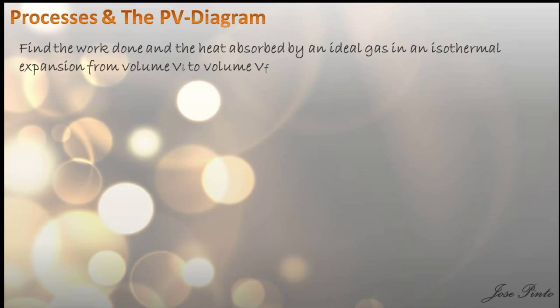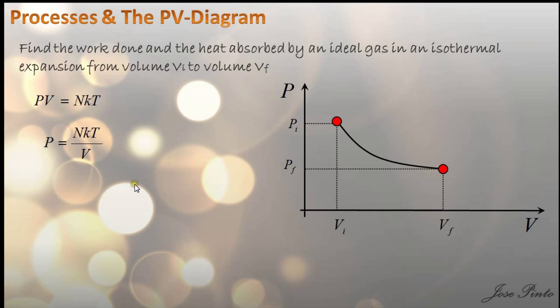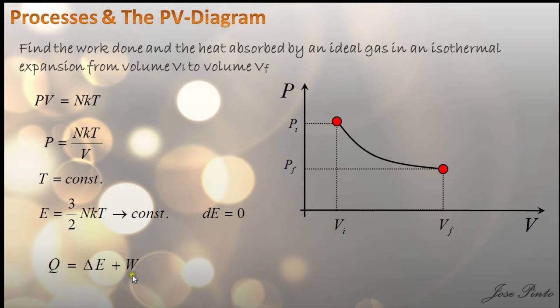First, when you hear the words ideal gas, you automatically think of the ideal gas equation, so you know what P is. Next, the process is isothermal, so the temperature is constant and you know how the graph looks. Notice that constant temperature implies constant internal energy, so there is no change in internal energy. Looking at the first law of thermodynamics, the work done by the system is the same as the heat gained by the system — so if you find the work, you automatically know the heat.